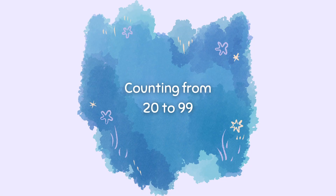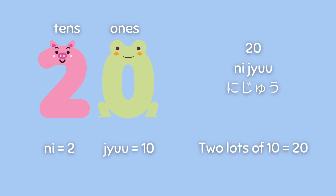Counting from 20 to 99, you will say how many tens and the units. 20 would be 二十, meaning two lots of ten.